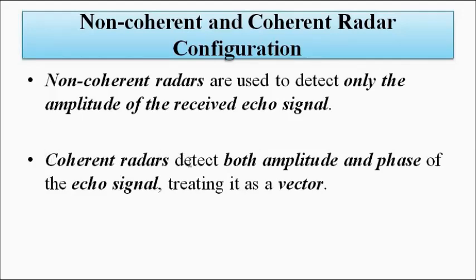Coherent radars detect both the amplitude and phase of the echo signal, treating it as a vector quantity. In this case, much more detailed information can be extracted about the target. To summarize: non-coherent radars detect only the amplitude of the echo signal, giving limited scope of information, whereas coherent radars make use of both amplitude and phase, providing a broader scope of information extraction.